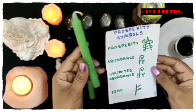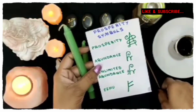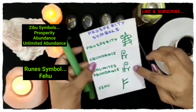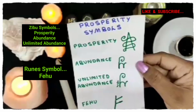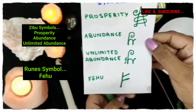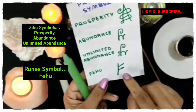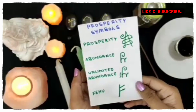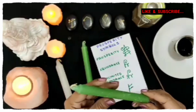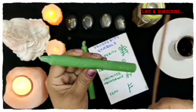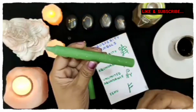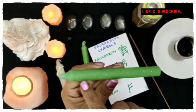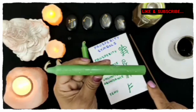These are the Zebu symbol for prosperity, abundance, unlimited abundance, and this is the rune symbol Fehu for prosperity. You can use any pointed object to carve on it. I use an incense stick to carve. I have already carved on this candle — I hope you can see it clearly.